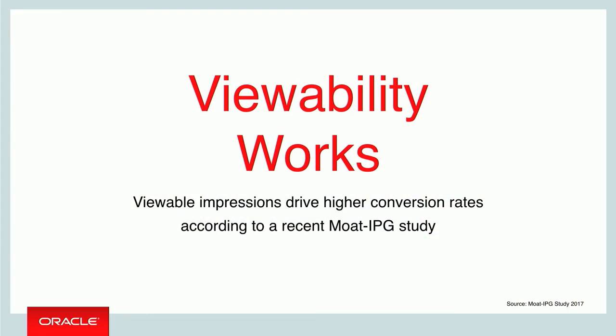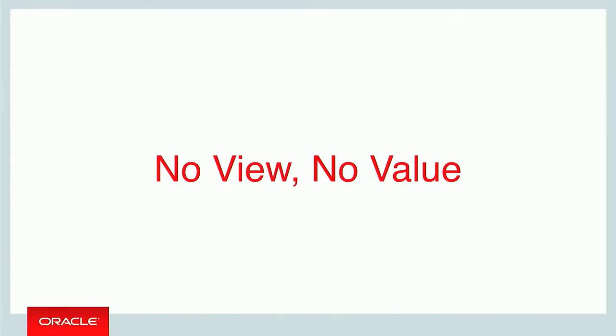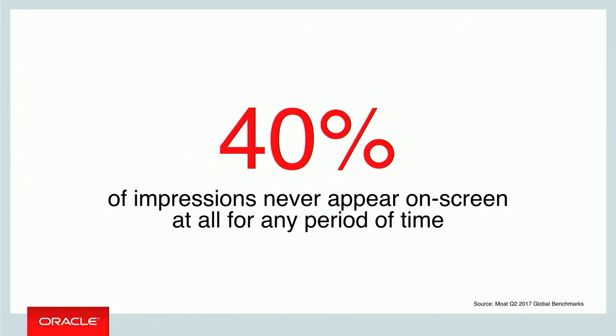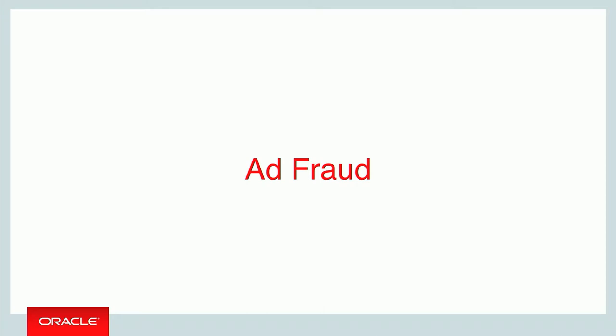Viewability works. It makes sense: if I buy a hundred ads and only 10 were ever seen by somebody, I can expect a certain result. But if I can get 90 of those ads to be seen, I should have significantly better results. Brands are coming to realize that if the ad was not seen, there is no value. And we still have to address the fact that five years later, 40% of ads are never on the screen at all. Which brings us to the second part: ad fraud.